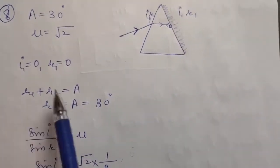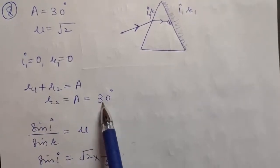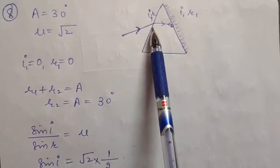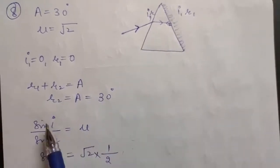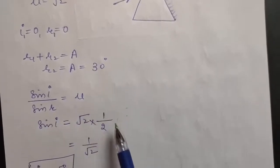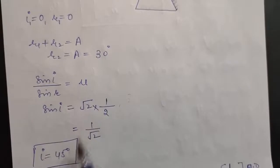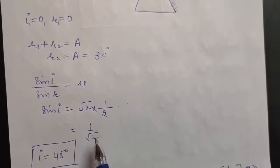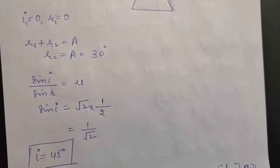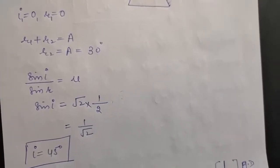Since r1 is 0, from the relation r1 + r2 = A (angle of prism), r2 comes to be 30 degrees. Applying Snell's law on the first surface: sin i / sin r = mu. So sin i = mu times sin r = root 2 times sin 30 = root 2 times 1/2 = 1/root 2. Since sin 45 = 1/root 2, the angle of incidence is 45 degrees.